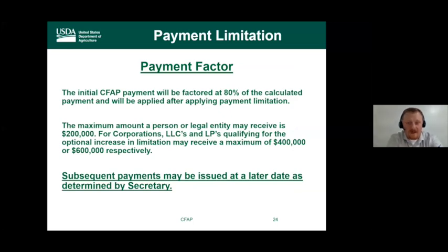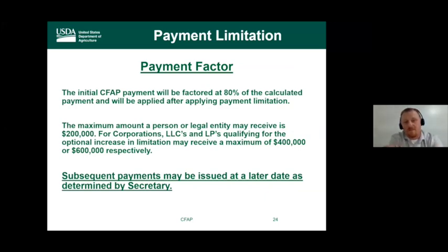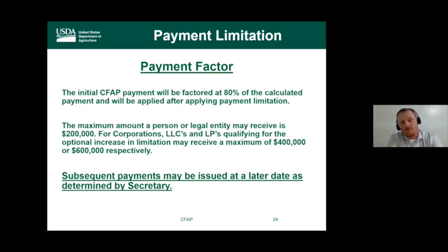Due to the 80% payment factor, the maximum initial payment a person or legal entity will receive is $200,000. For corporations, LLCs, and LLPs qualifying for the optional increase, the maximum initial payment is $400,000 or $600,000 respectively. Subsequent payments may be issued later as determined by the secretary.